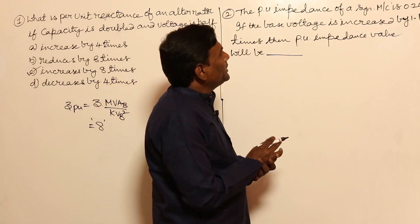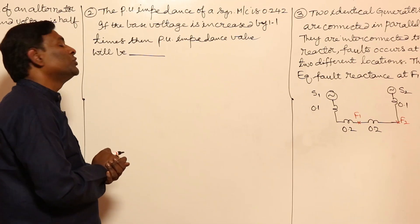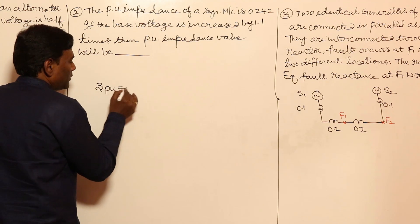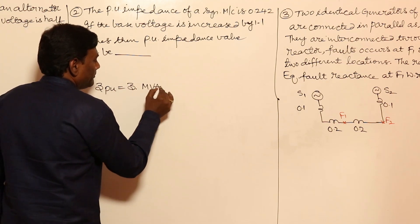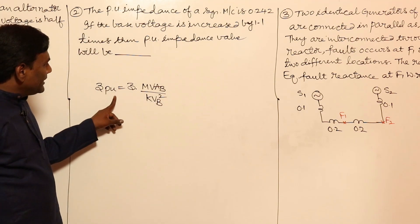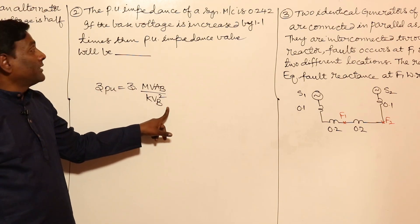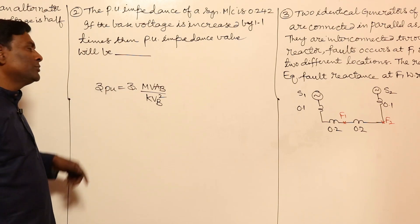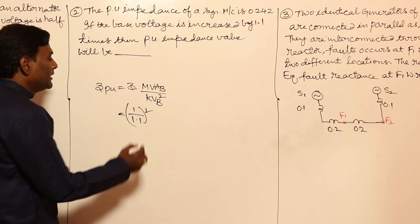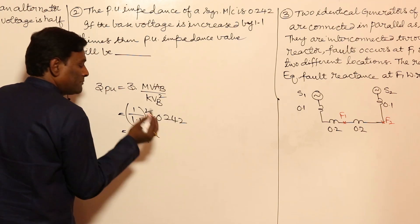Next problem: The per unit impedance of a synchronous machine is 0.24. If the base voltage is increased by 1.1 times, the per unit impedance value will be? No information about MVA is given, so forget about it. Z per unit is inversely proportional to voltage base squared. Voltage increased means Z per unit should reduce. New Z per unit equals (1 / 1.1 squared) into 0.242, which gives approximately 0.2 per unit.